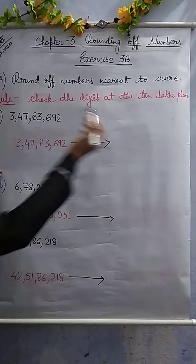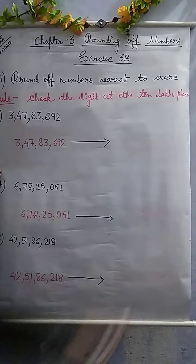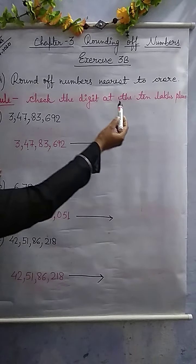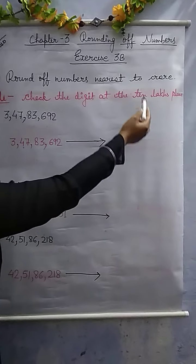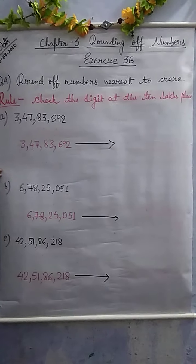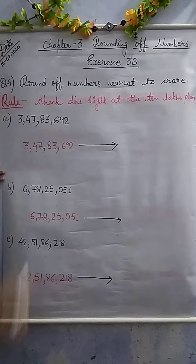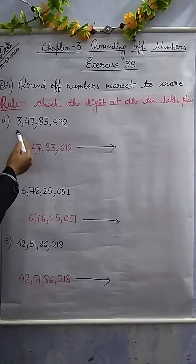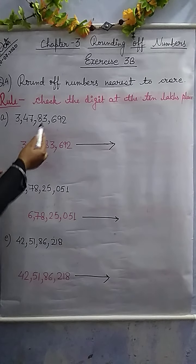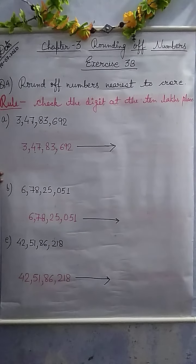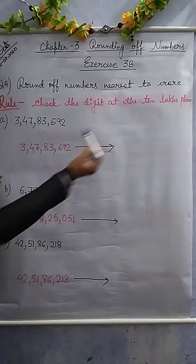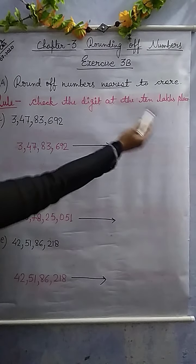10 lakhs place — so we check at the 10 lakhs place. The question is: 3 crore 47 lakh 83,692. So we check at the 10 lakhs place. Aur hume round off nikalna hai nearest to crore.